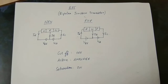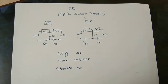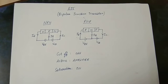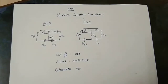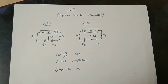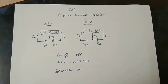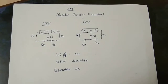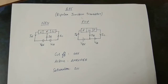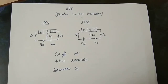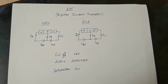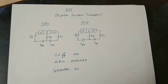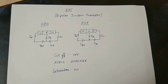This is the amplification process. There is the active region, the fully on state (saturation), and the cutoff region. The saturation point is when the transistor is fully conducting.